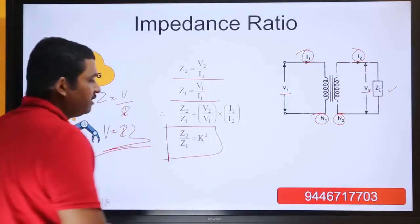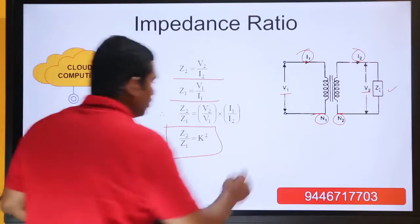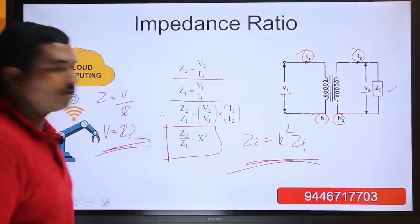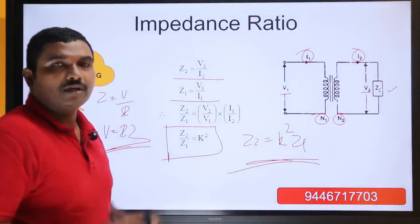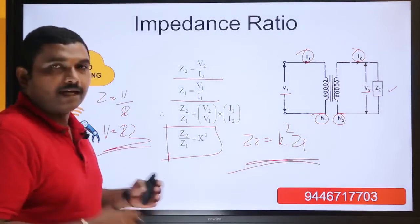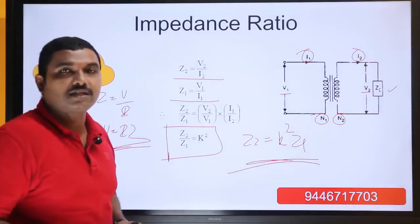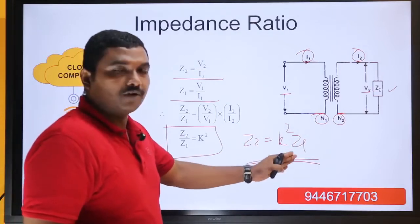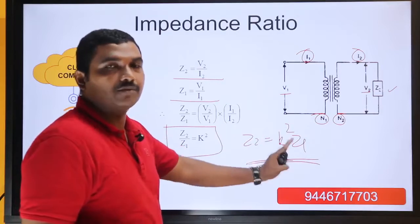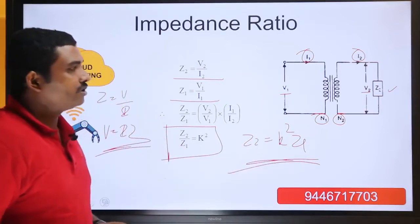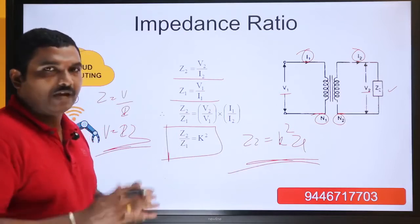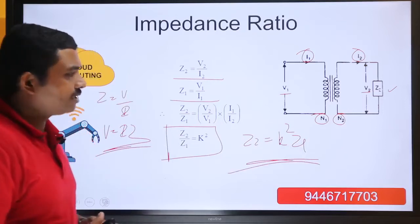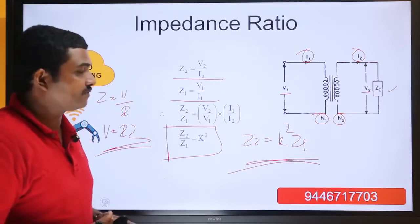So if your primary impedance is Z1, the secondary reflection of your primary impedance is K squared times Z1. If you want to convert primary impedance into secondary impedance, you multiply by the turns ratio squared. This transformation factor is one of the most important questions asked in competitive examinations including GATE and PSU examinations.